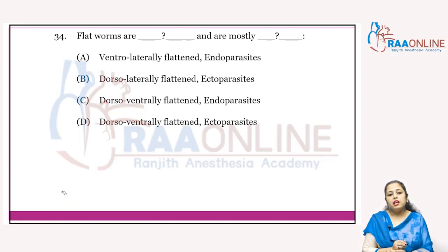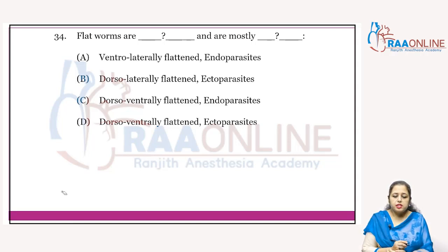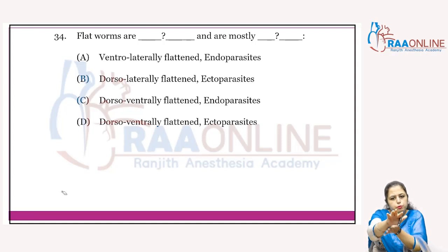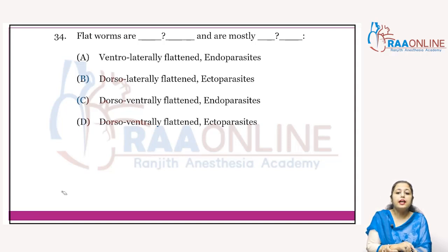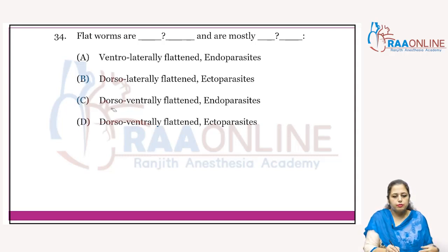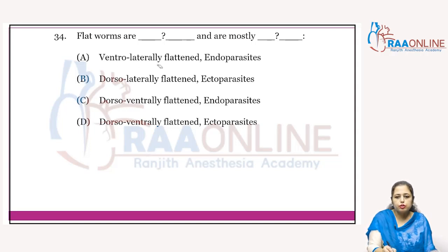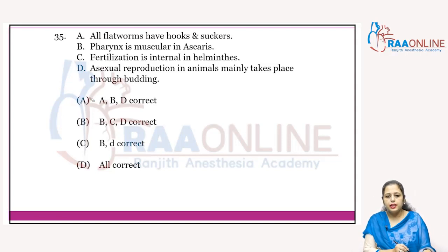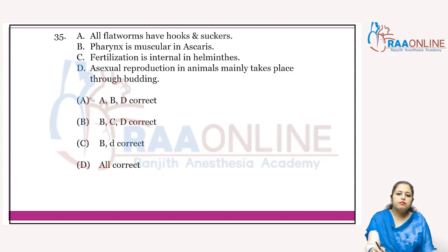Flatworms belong to phylum Platyhelminthes. All members are worms — they are dorsoventrally flattened. They are mostly endoparasites (not ectoparasites) because they attack internal systems. So the answer regarding their orientation is 'dorsoventral.' First option cancelled — endo/ecto both cancelled — answer is C.